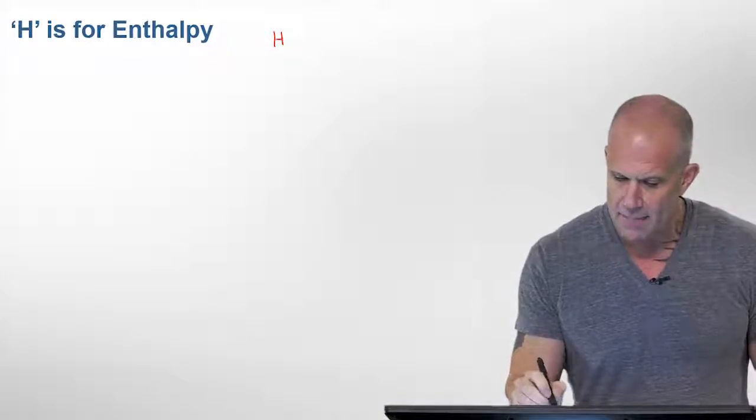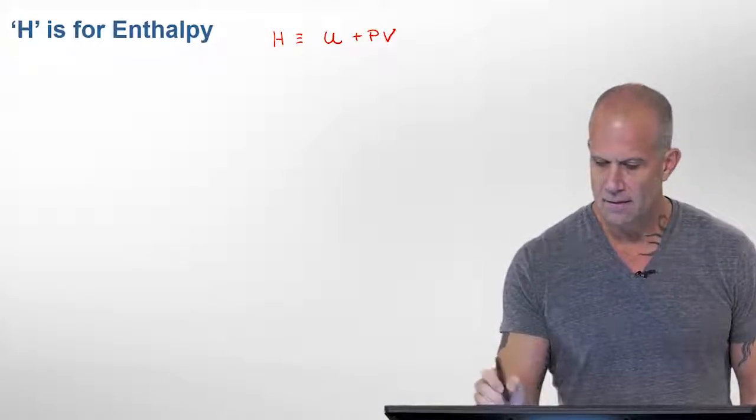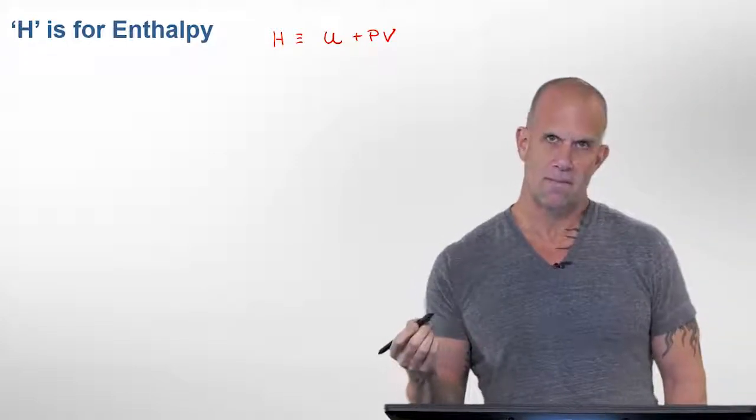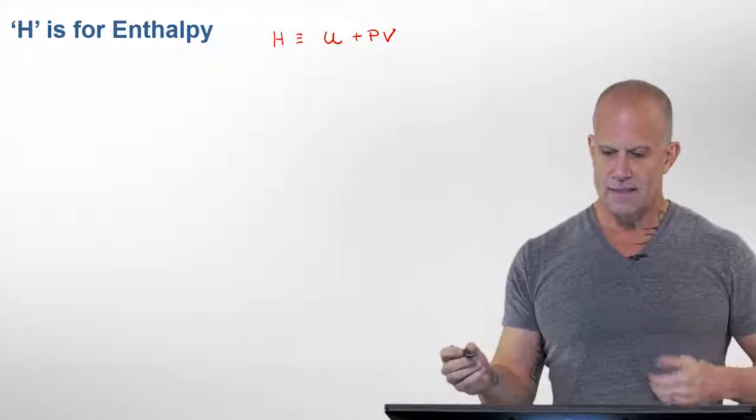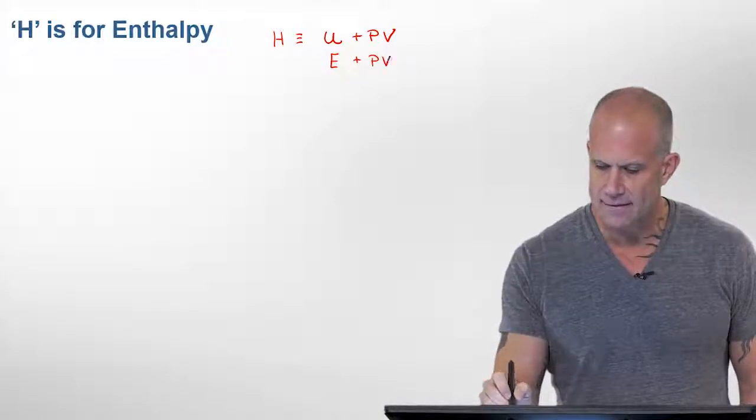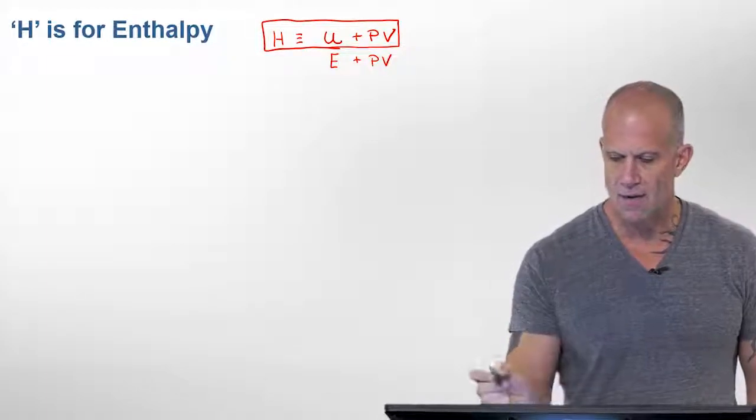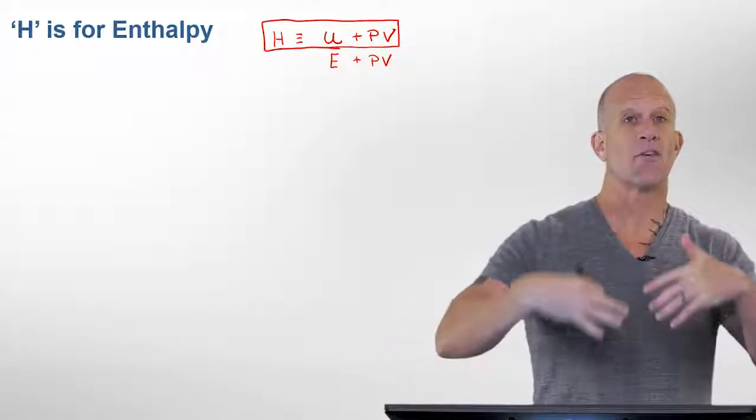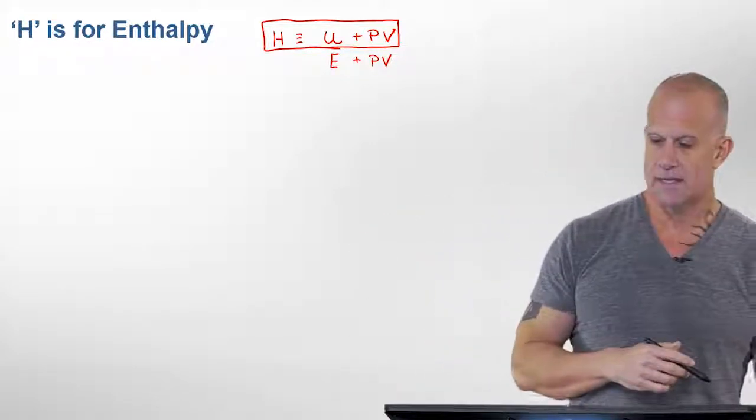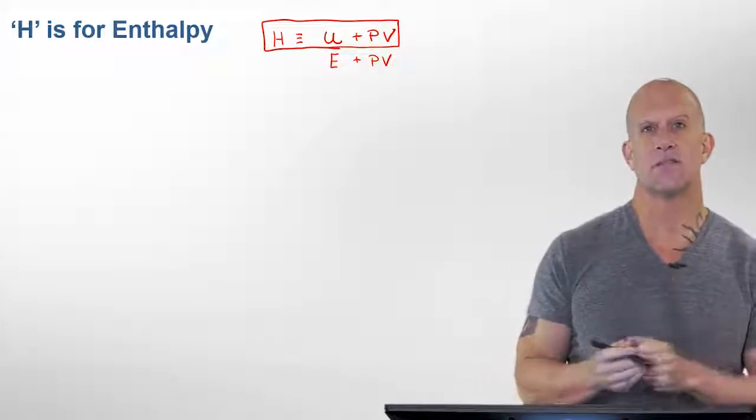So we're going to use a capital H as the symbol to represent enthalpy. And what is enthalpy? It's defined to be the internal energy or the energy of a system, plus the product of pressure volume. And this will often get represented as an E instead of a U. Modernly, we usually use U to represent the internal energy. However, in the past, E was often for energy used to represent the internal energy of the system.